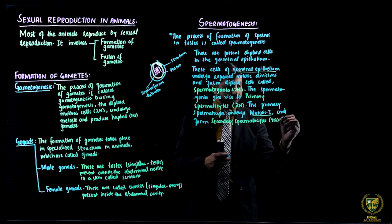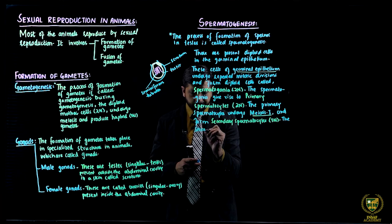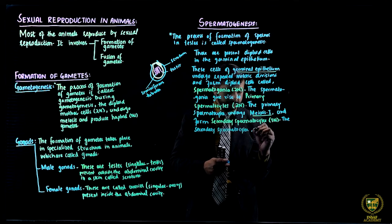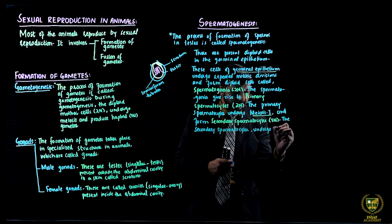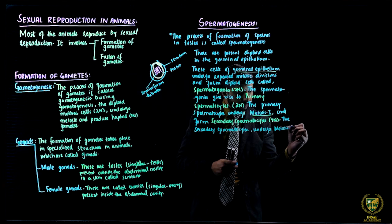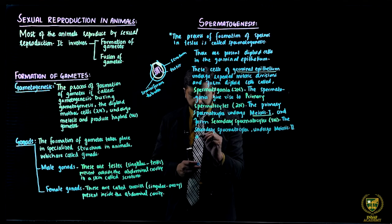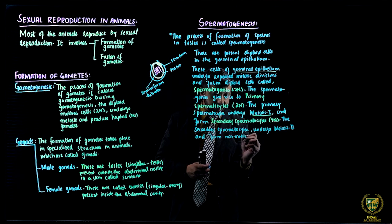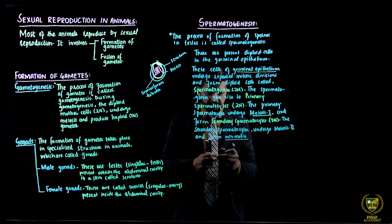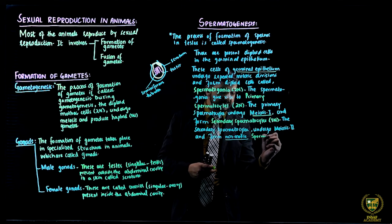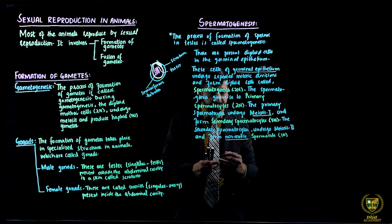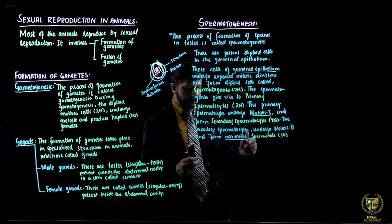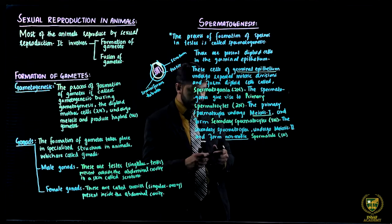Then the secondary spermatocytes undergo meiosis 2, the second phase of meiosis, and form non-motile spermatids. Non-motile means they cannot move, they cannot show movement. These non-motile spermatids are also haploid. Since they are non-motile, they have no role in reproduction until they convert into sperms.